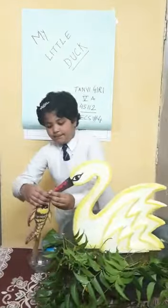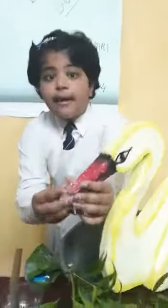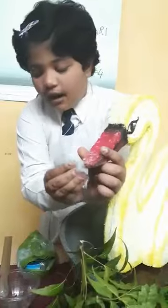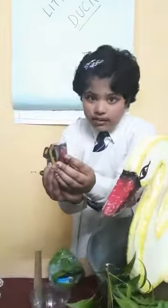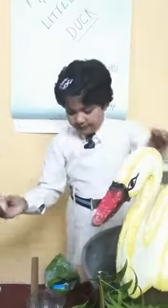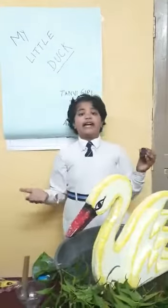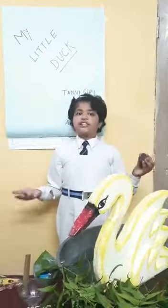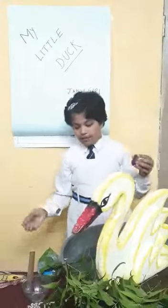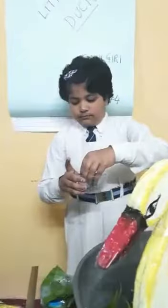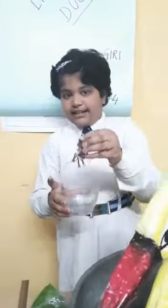See, here is a magnet in the beak of the duck, and I have also hidden one magnet in the food place. A magnet is a material which attracts objects made up of iron, nickel, and cobalt — like this.